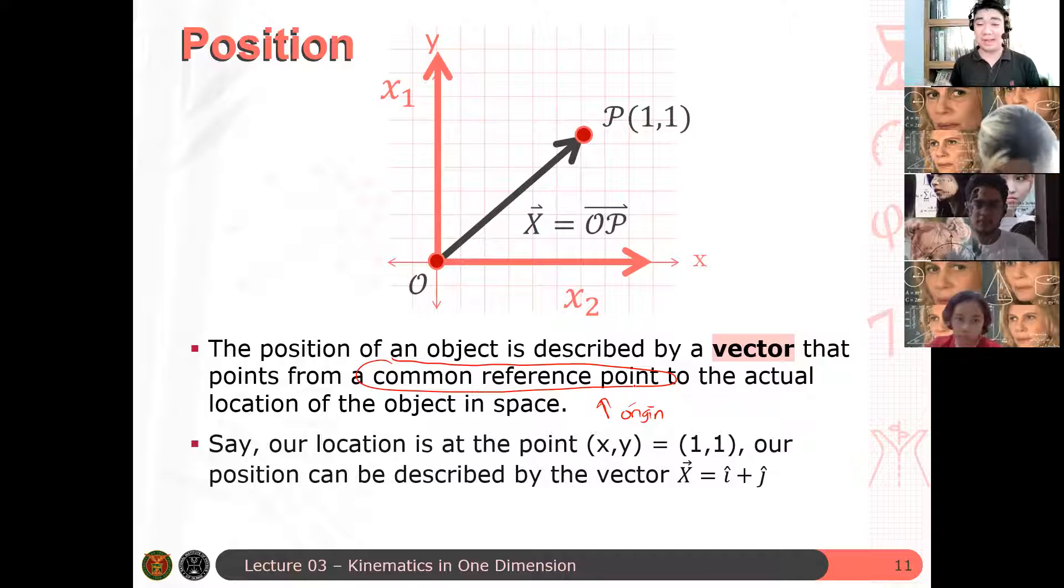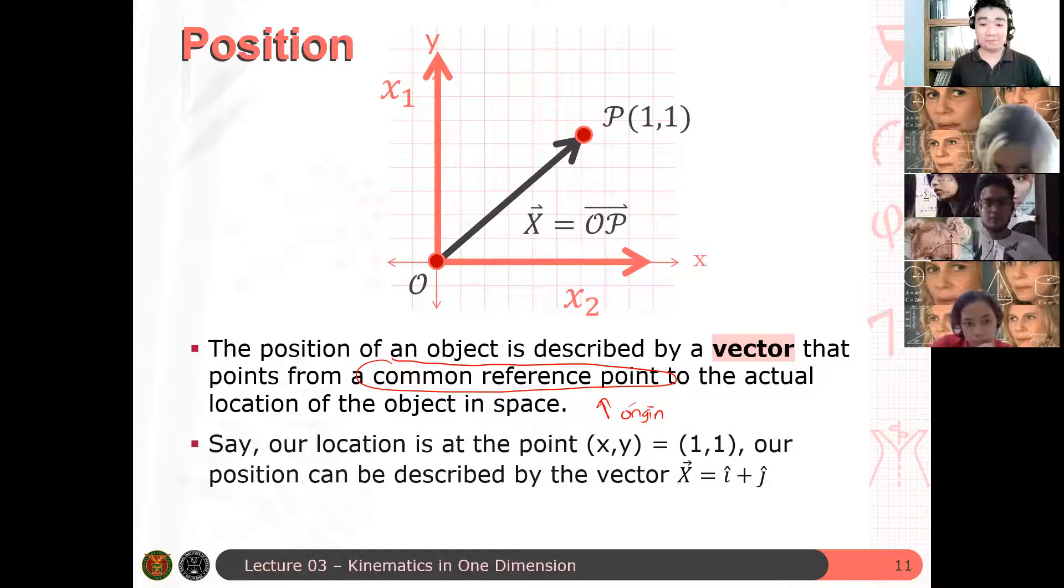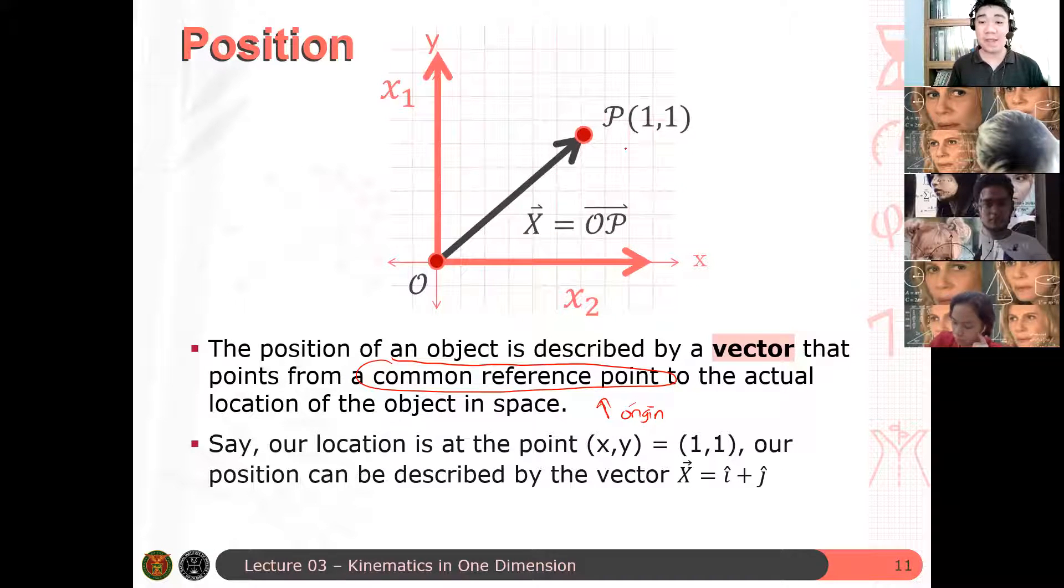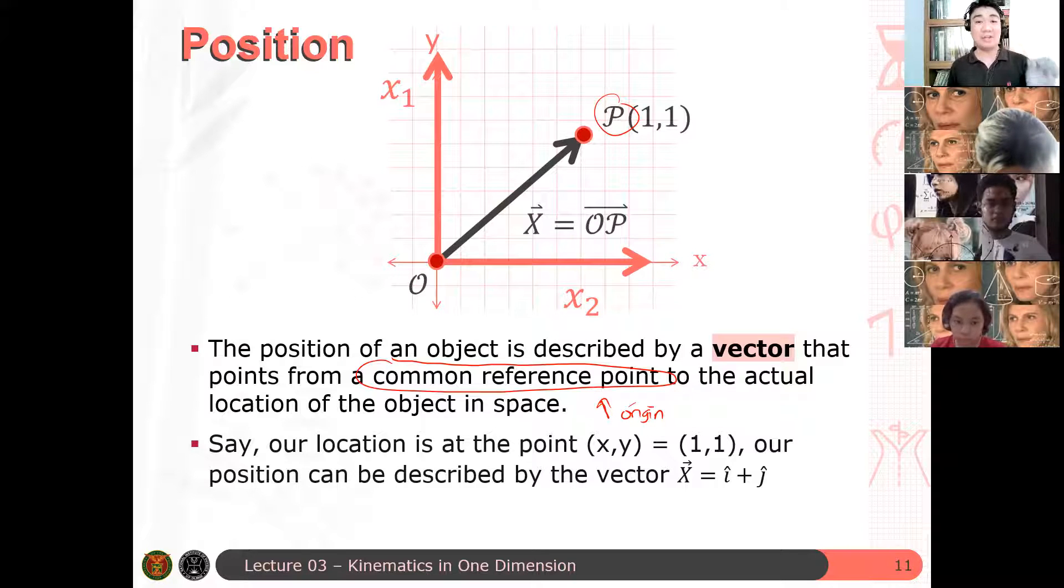Remember your unit vectors, right? So I can define my unit vectors relative to point O, which is now defined to be my coordinate system or the origin of my coordinate system. So say our location is again at point 1, 1. Then the position of this point P in this particular coordinate system is i hat plus j hat. Again, you define a vector from the origin towards this point. That's the position vector.